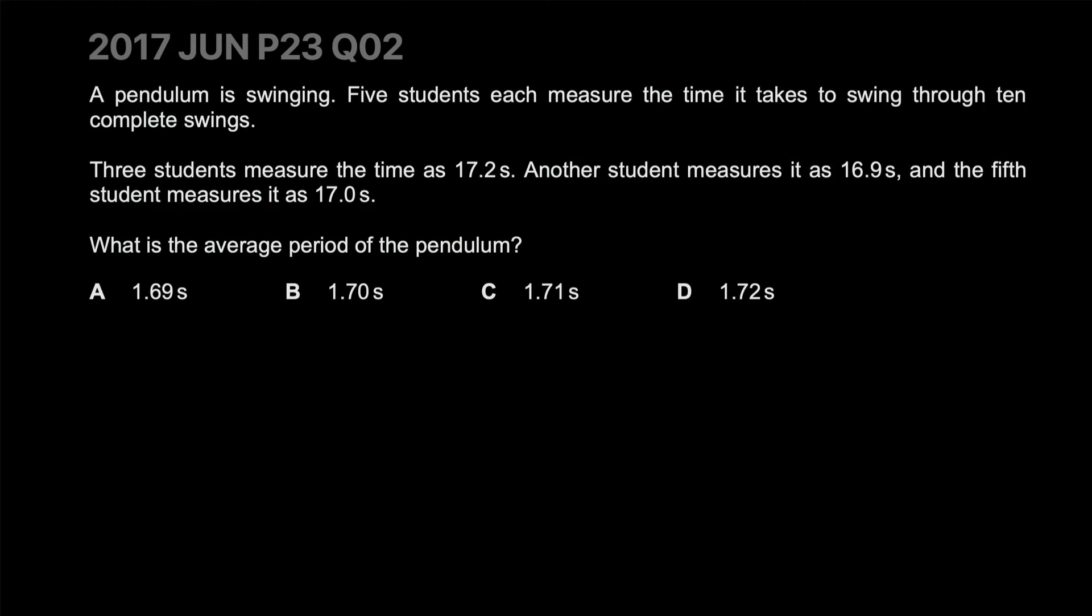A pendulum is swinging. Five students each measure the time it takes to swing through 10 complete swings. Three students measure 17.2 seconds, another measures 16.9, and the fifth measures 17 seconds. What is the average period of this pendulum? The average equals the sum of all recordings divided by the number of recordings.